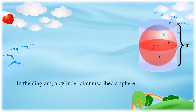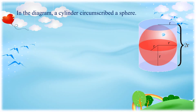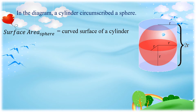Now let us look at the diagram where a cylinder circumscribes a sphere. In this diagram, we are going to find out the surface area of a sphere, which is equal to the curved surface of a cylinder. We all know that the formula is 2πRH.